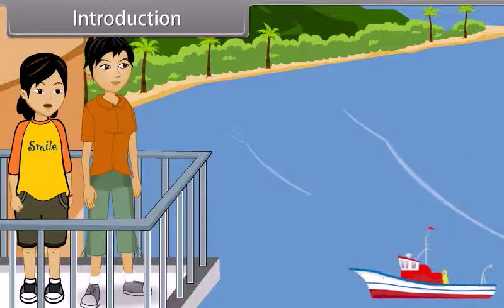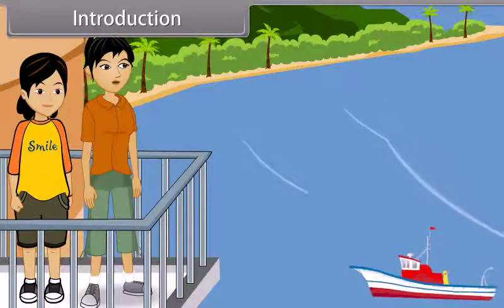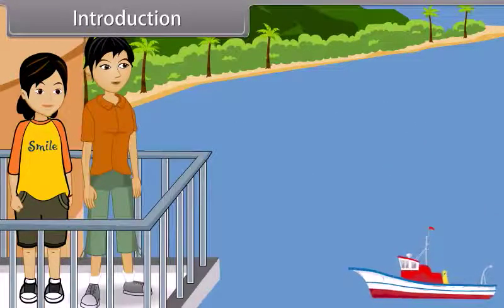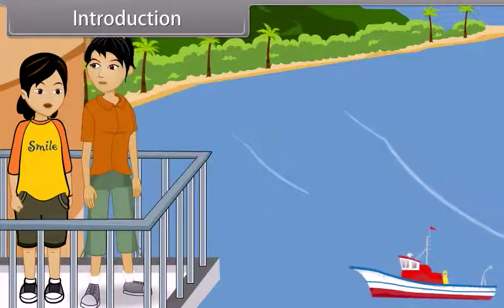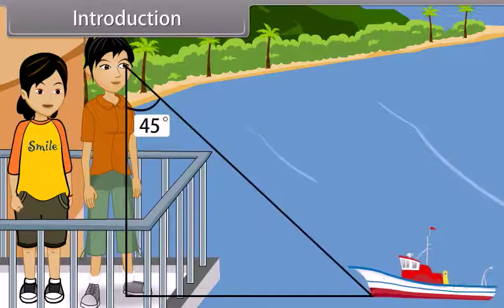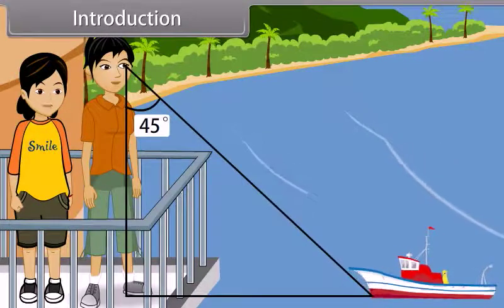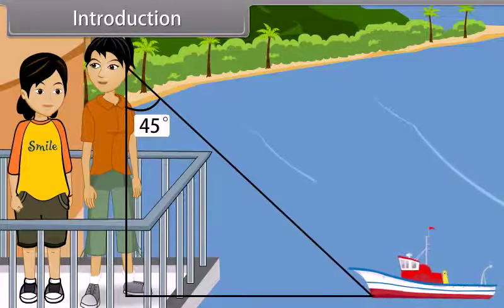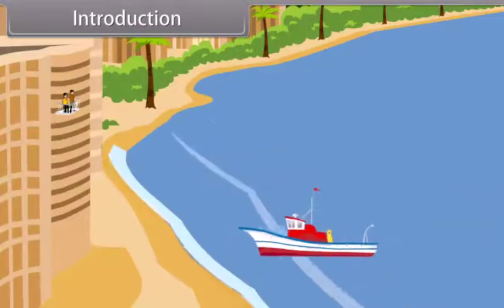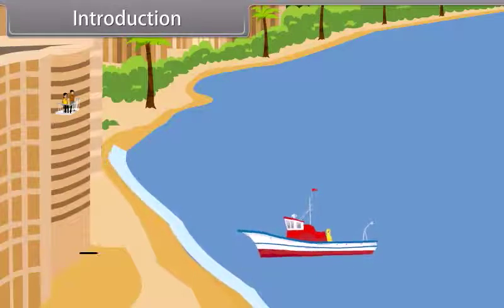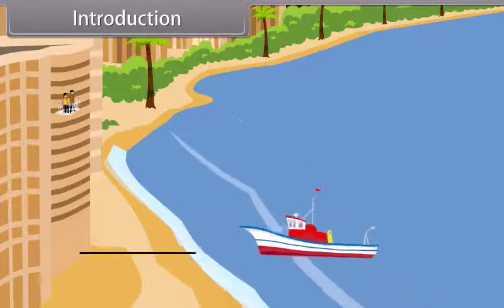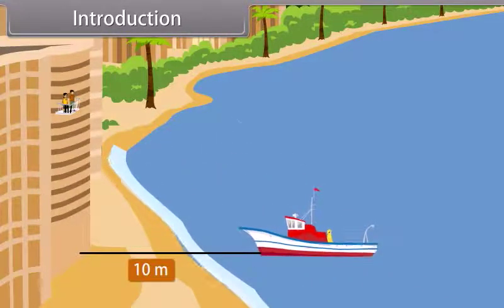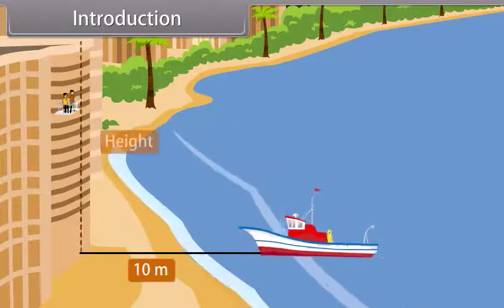Anvesha, are you looking at the ship? Yes, it is such a beautiful sight, see? You are right. Do you realize that your line of sight forms an angle of 45 degrees with the ground? You are right, Vedika. If I told you that the distance between our building and the ship is 10 meters, can you tell me the height of this building?